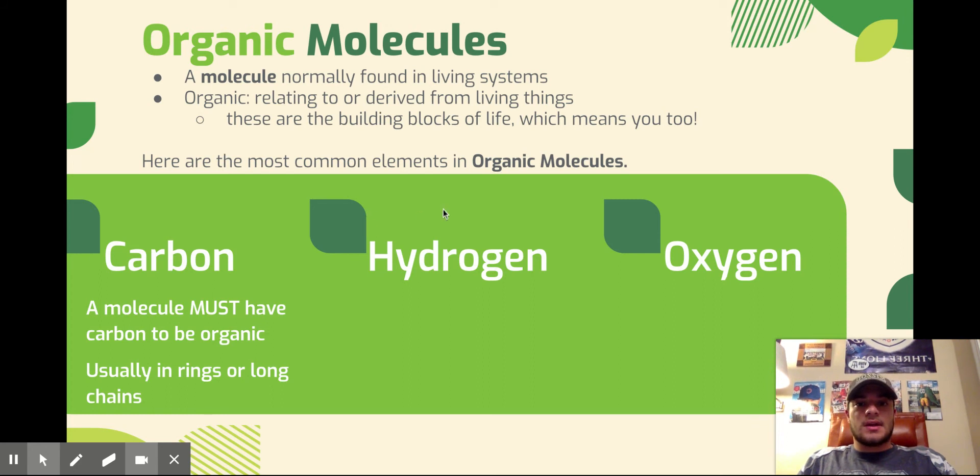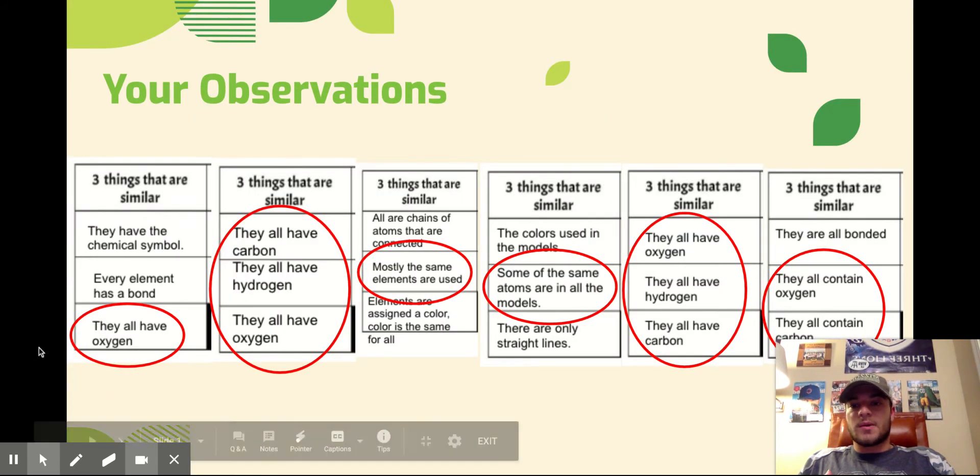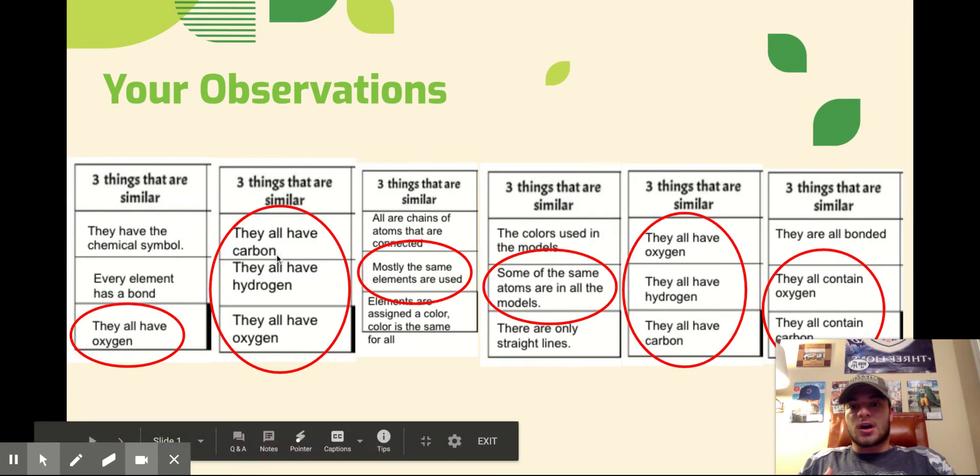In organic molecules, there are common elements. The three most common elements are carbon, hydrogen, and oxygen, right? Everything that we mentioned here: oxygen, carbon, and hydrogen.